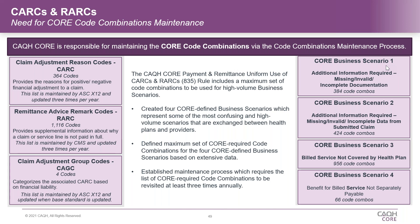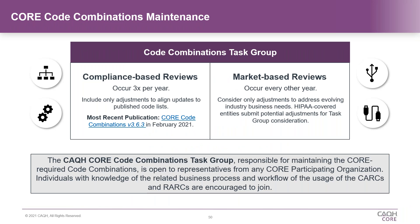We have a maintenance process — a task group at CAQH Core that meets periodically to review both a compliance-based review that happens three times a year, and a market-based review that occurs every other year. The market-based review ensures that the core code combinations and business scenarios are maintaining and meeting the current business need as things change. We initially published our first list back in June of 2012. Nine years later, we have published this list at least three or four times every year since, so lots of changes have occurred over almost a decade of publishing.